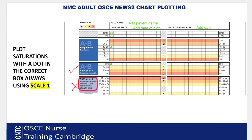For saturations, there are two scales — Scale 1 and Scale 2. For the OSCE, always use Scale 1. Scale 2 is only used for critically ill respiratory patients under clinician supervision. Even if your patient has a shortness of breath scenario, asthma, or pneumonia, always use Scale 1. Do not use Scale 2 in your exam.